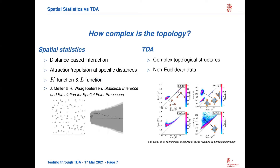In order to develop such a test, there are certain questions and crossroads where we have to make a decision. First of all, how complex is the data topologically? Maybe the signal we want to detect is already encoded in just a deviation of the distances between points when we compare this to complete spatial randomness. In that case, we can rely on a very well developed statistical toolkit provided by spatial statistics, with refined tools such as the K function or the L function that allow us to detect certain patterns of repulsion or attraction over specific distances.